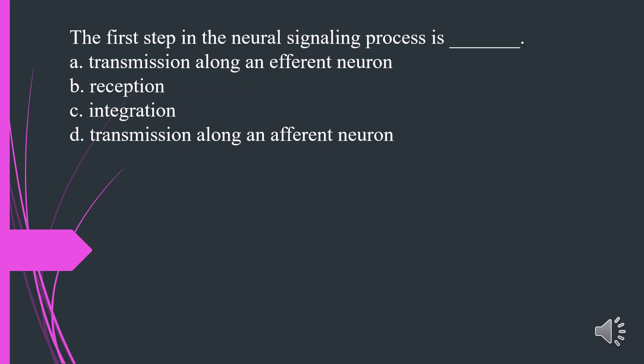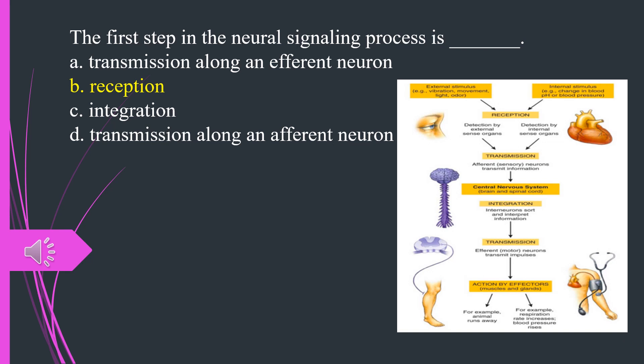The first step in the neural signaling process is called: A. Transmission along an efferent neuron. B. Reception. C. Integration. D. Transmission along an afferent neuron. The answer is B. Reception.